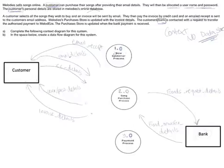So process one is everything concerned with the new customer process. So when people register for your system, that's where they're going to go. Number two is your song purchase process. So anything to do with the purchasing of the song, that's where the information is going to be processed. And anything to do with the number three is the payment process. Anything to do with payment, for example, credit card details, that's going to be your number three process.